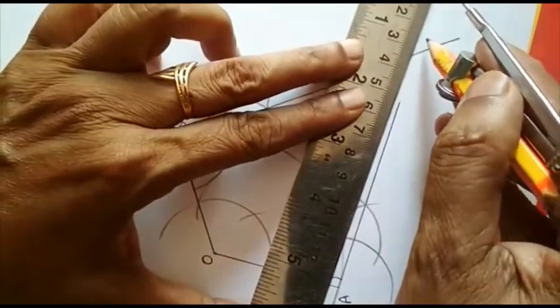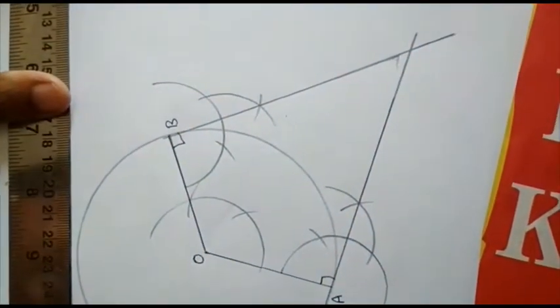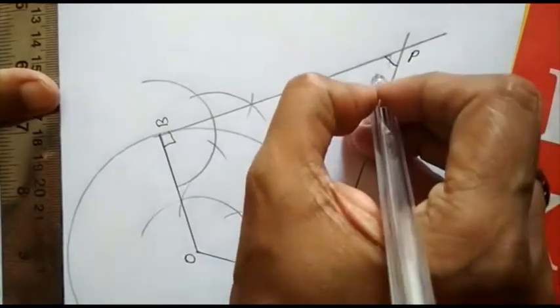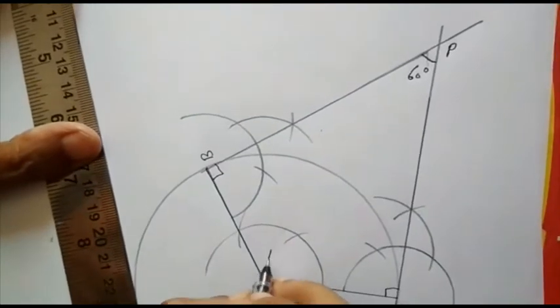One at point A and another at point B. No doubt, when we extend them, they will intersect at a point P and definitely, if we measure this angle, it will be 60.